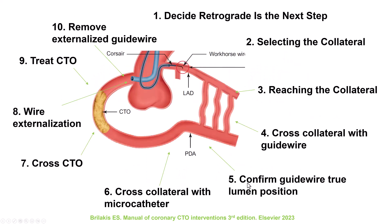To summarize, the retrograde approach is done by using 10 steps. Having a methodical approach and going step by step without trying to jump ahead can help make this procedure more successful and minimize the potential risks associated with this approach. Thank you.